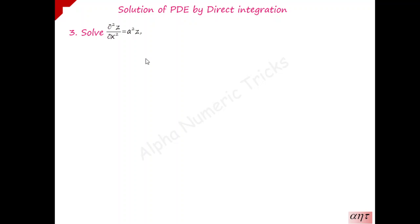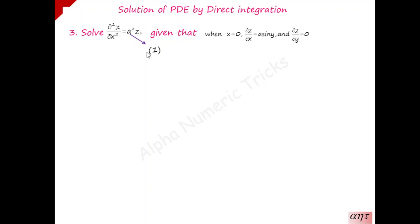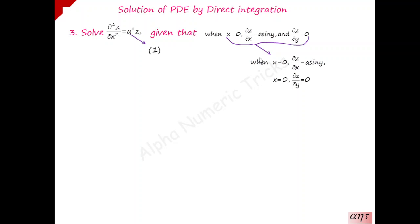The problem is: solve ∂²z/∂x² = a²z, with the initial conditions — when x = 0, ∂z/∂x = a sin y, and ∂z/∂y = 0. This is given as equation 1. The meaning of these conditions is: when x = 0, ∂z/∂x = a sin y, and when x = 0, ∂z/∂y = 0. The purpose of these initial conditions is to find the values of the arbitrary functions in the solution.